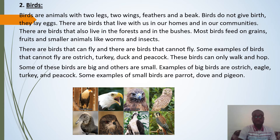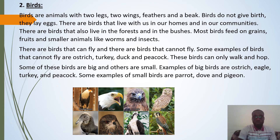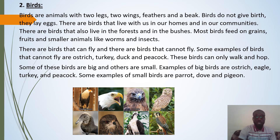There are birds that can fly and birds that cannot fly. Some examples of birds that cannot fly are the ostrich, turkey, duck, and peacock. These birds can only walk and hop. Examples of big birds are the ostrich, eagle, turkey, and peacock. Some examples of small birds are the parrot, dove, and pigeon. Looking at the picture, you can see some types of birds.